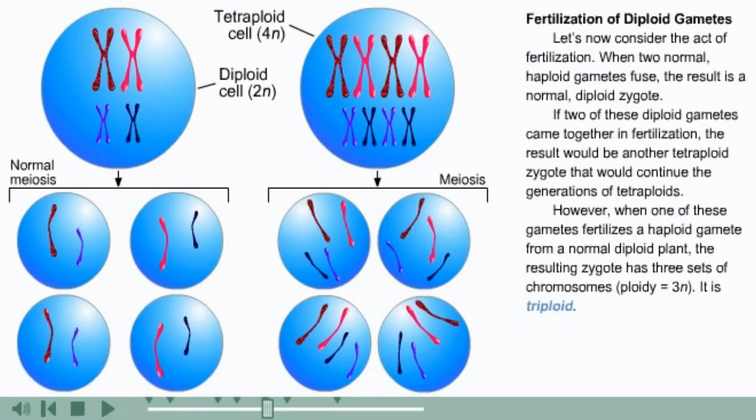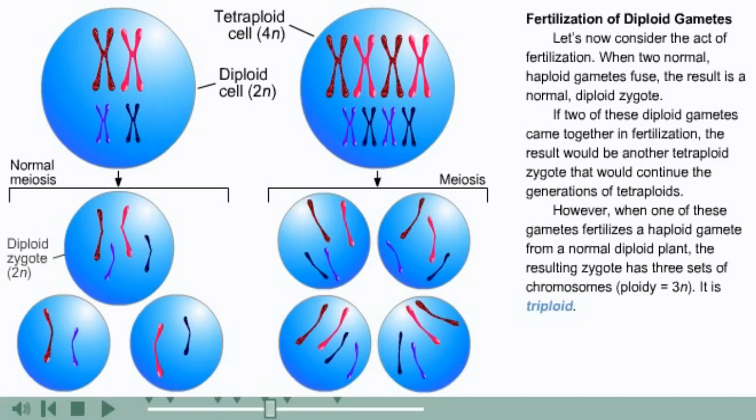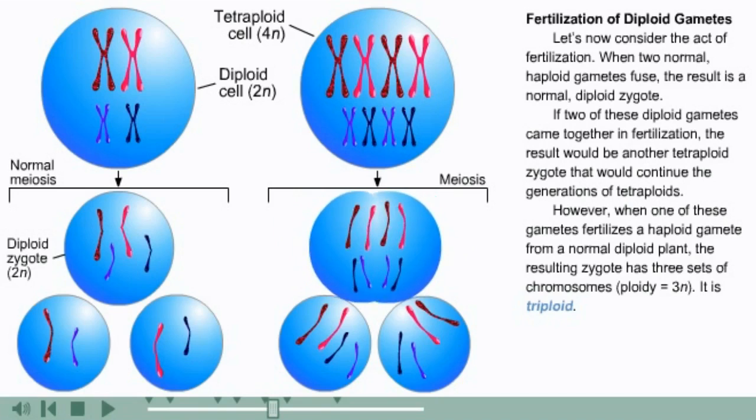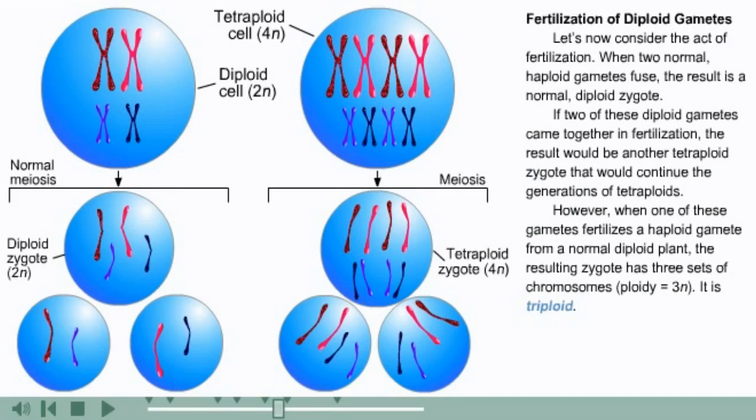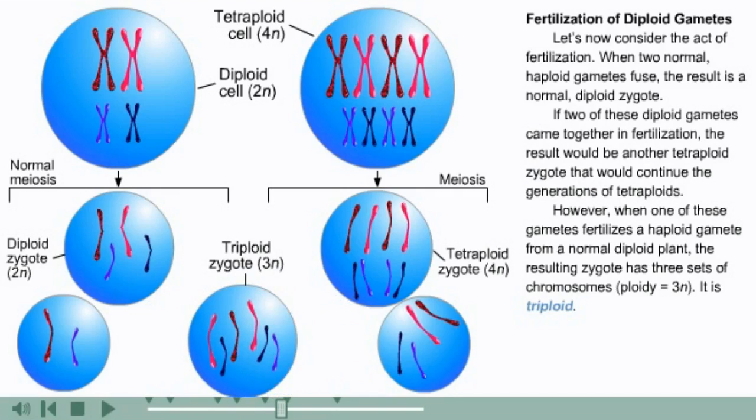Let's now consider the act of fertilization. When two normal haploid gametes fuse, the result is a normal diploid zygote. If two of these diploid gametes came together in fertilization, the result would be another tetraploid zygote that would continue the generations of tetraploids. However, when one of these gametes fertilizes a haploid gamete from a normal diploid plant, the resulting zygote has three sets of chromosomes, or a ploidy equaling 3n. It is triploid.